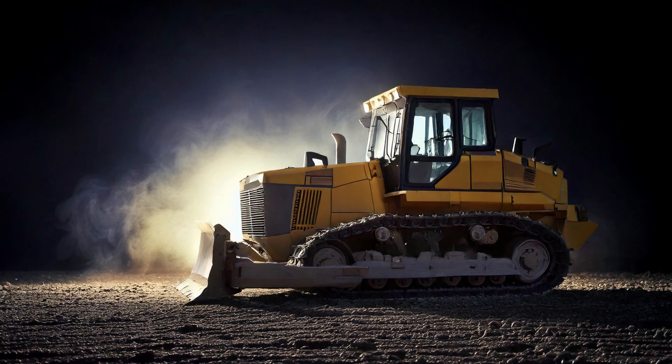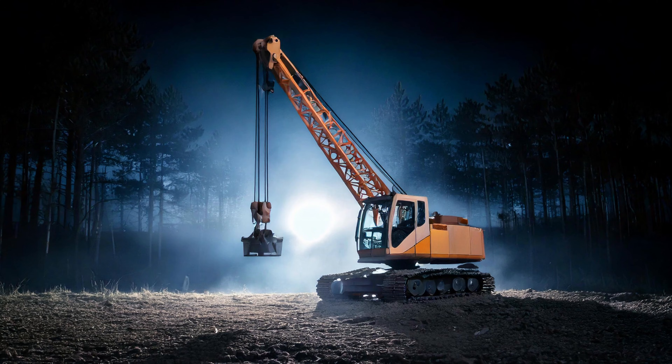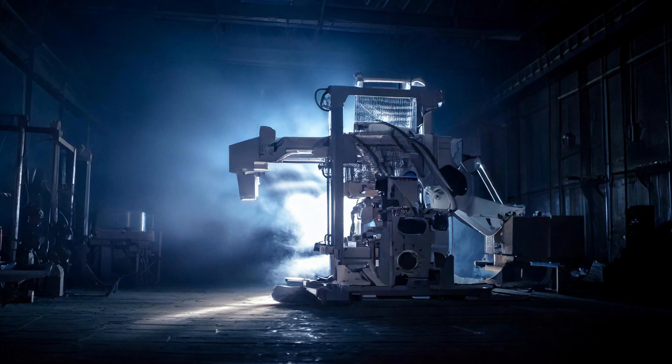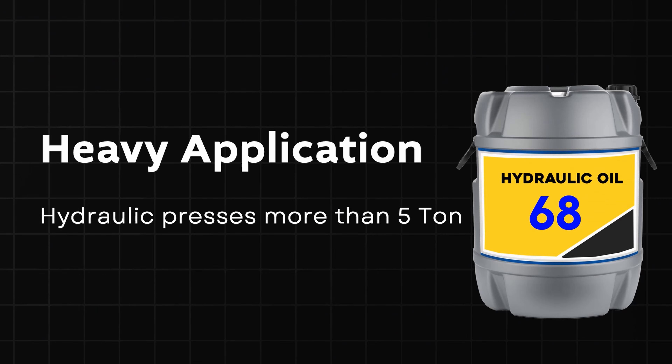For heavy-duty applications like bulldozers, cranes, or a heavy hydraulic press over 5 ton — like 10, 20, or 40 ton — use hydraulic oil 68, which can handle the temperature and heavy load. This is a general selection guide, but always check the machine manual or OEM spec. Using the wrong oil can reduce performance or damage the system.